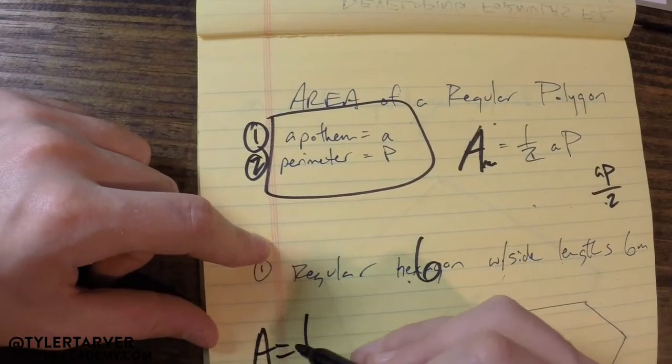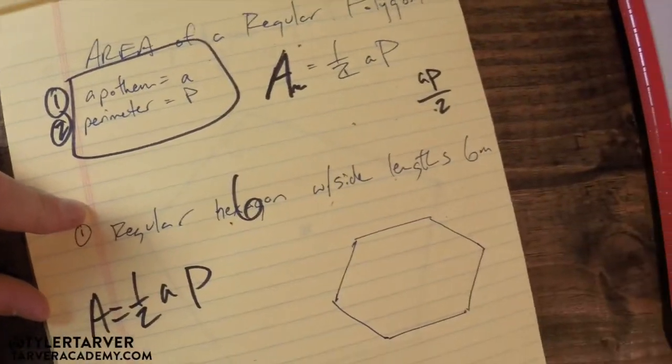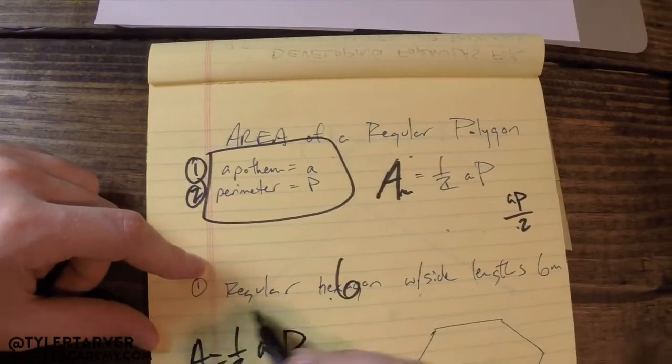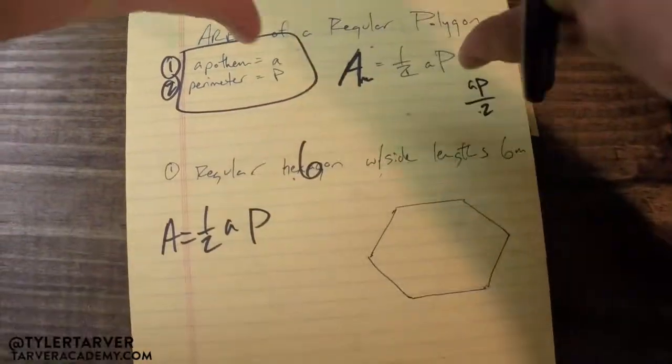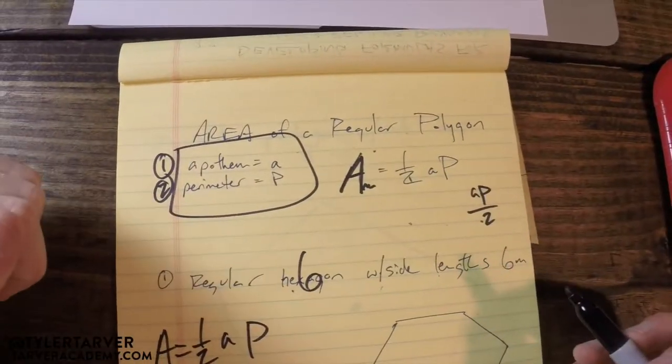Area equals one half apothem times the perimeter. So do we know either of those yet? No, we don't. So we need to figure them out.